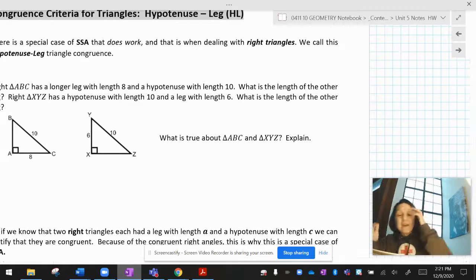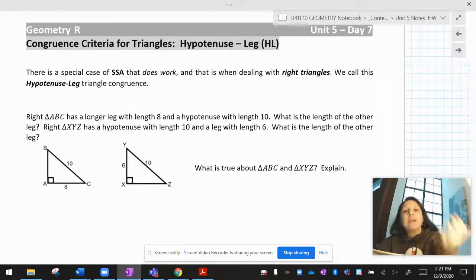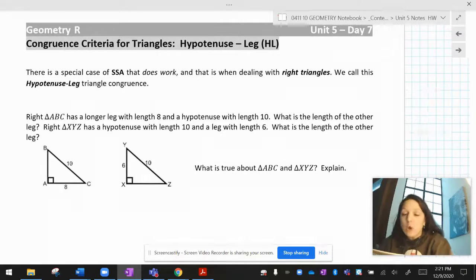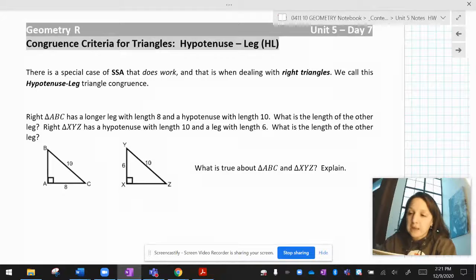Last one. It is our last triangle-proof lesson for this unit. Today we are going to talk about HL, also known as hypotenuse leg.